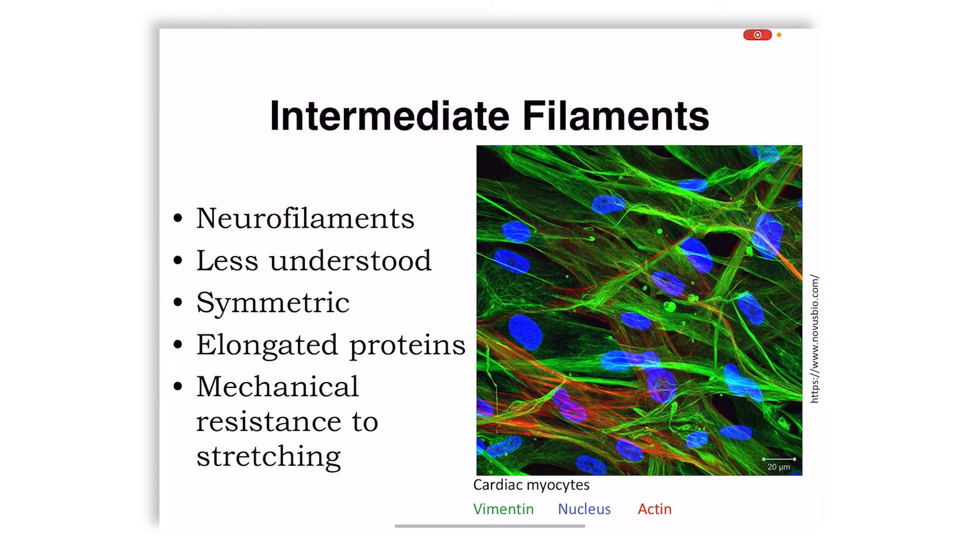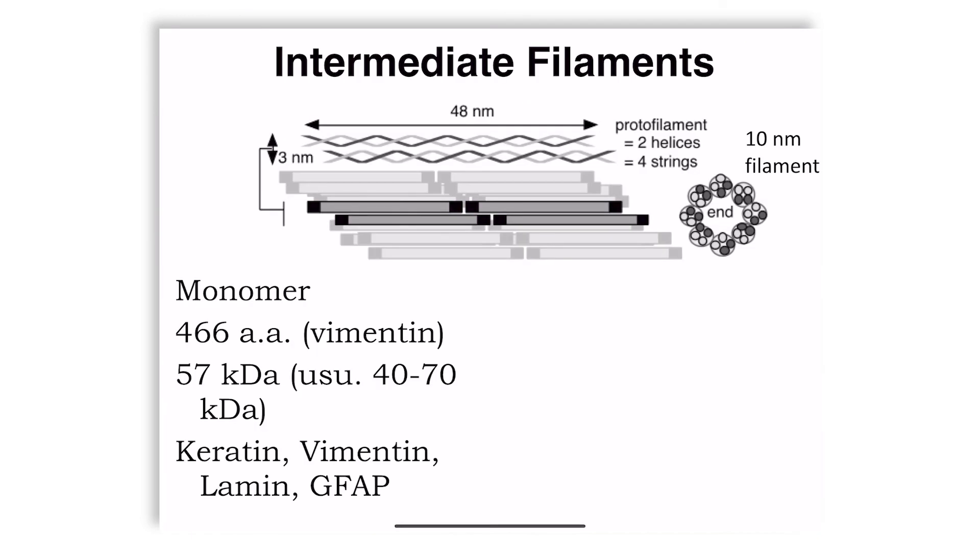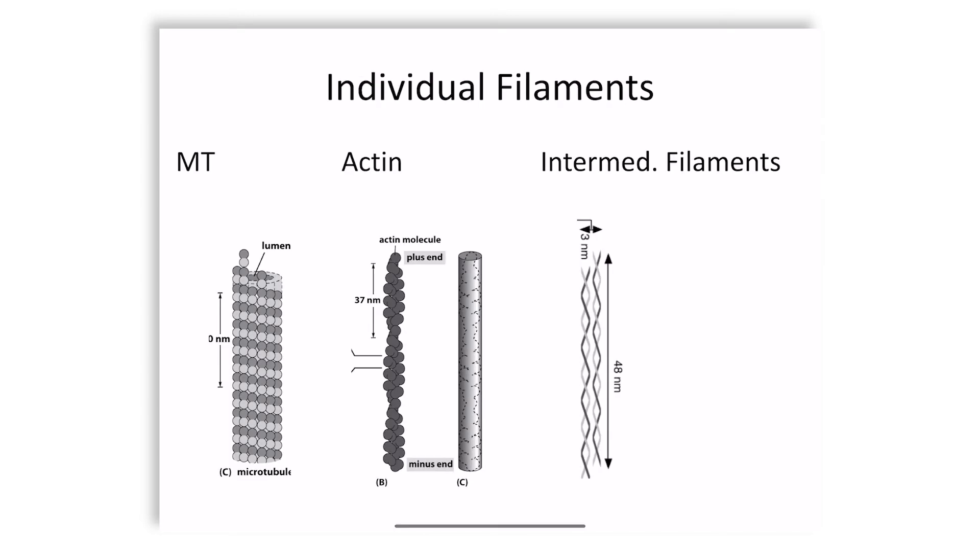It turns out that intermediate filaments are more likely to be static. They form these kind of higher order structures of protofilaments of two helices grouped together into four strings and so on and so forth, and vimentin, keratin that's in our hair, lamin, GFAP, all these are examples of intermediate filaments.